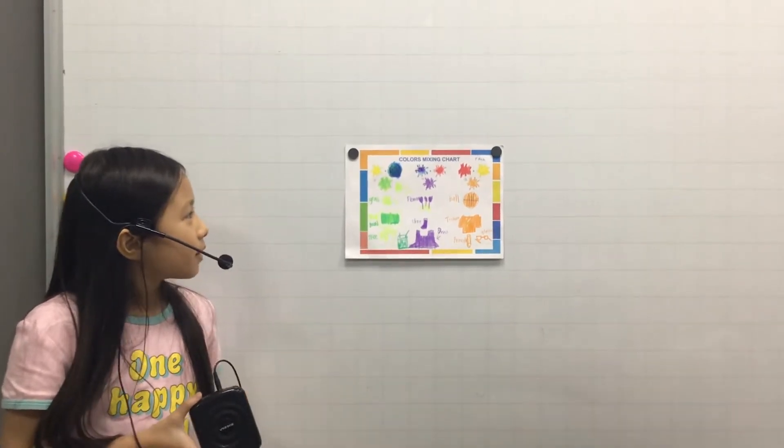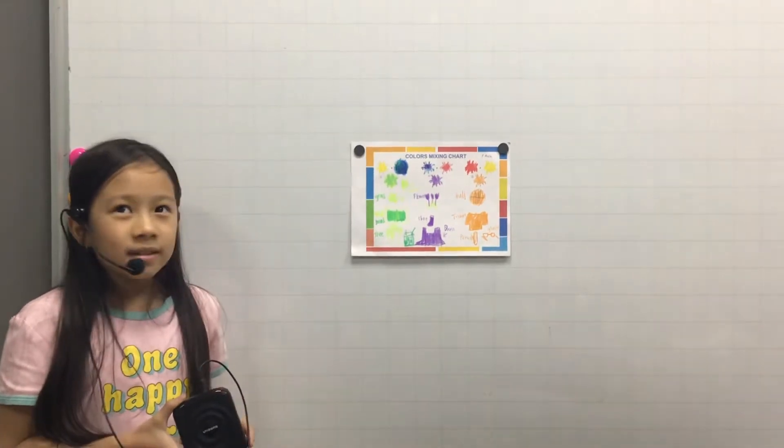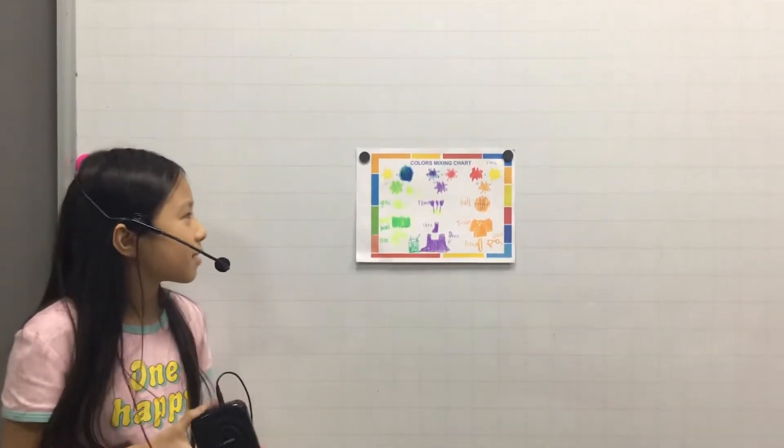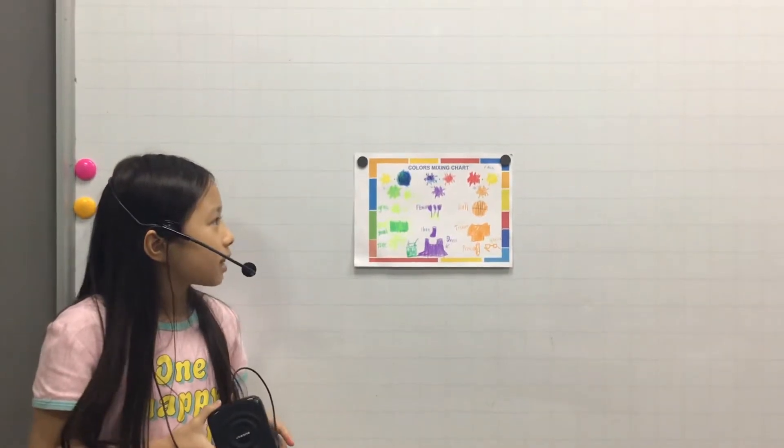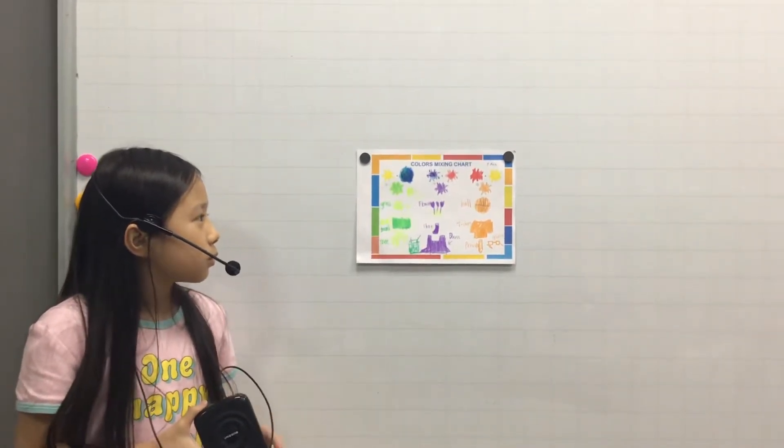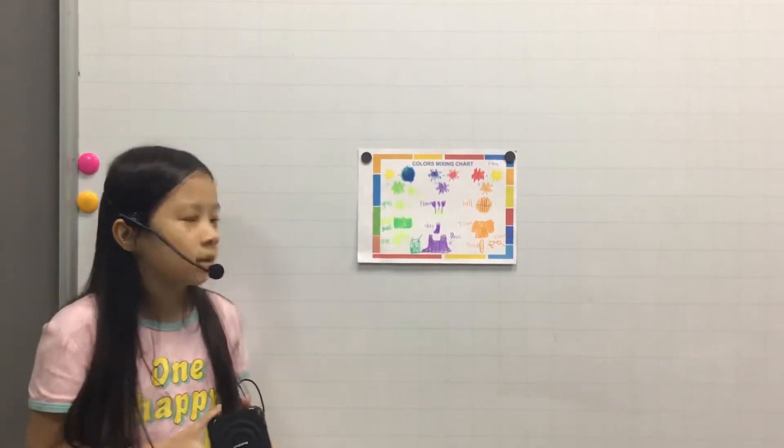First one, I will tell you about green. Green is the secondary color. I mix yellow and blue together. Green is the cool color.